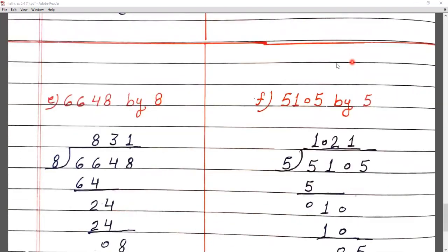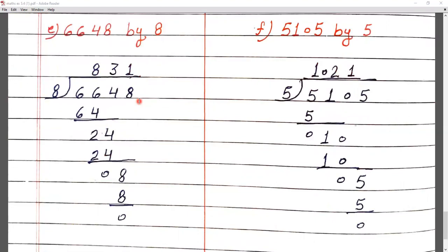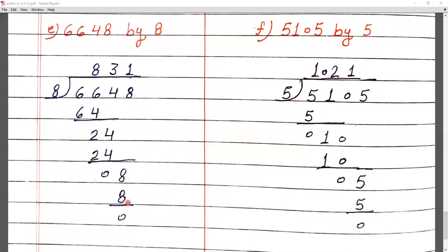Question E: 6648 by 8. Since 6 is smaller than 8, we make a pair: 66. 66 doesn't appear in the 8 times table, so we take 8 eights are 64. Subtract 64 from 66, remainder 2. Bring down next digit 4, making 24. 8 threes are 24. 24 minus 24 is 0. Bring down next digit 8. 8 ones are 8. 8 minus 8 is 0. The answer is 831.